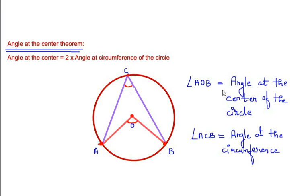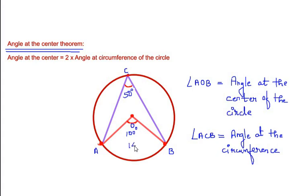Angle AOB is the angle at the center of the circle and angle ACB is the angle at the circumference. According to the theorem, the angle at the center is always two times the angle at the circumference. So if we have the angle at the circumference as 50 degrees, then at the center we have two times 50 degrees, which is 100 degrees. Vice versa: if we have an angle of 140 degrees at the center, then at the circumference the angle becomes half of 140, which is 70 degrees.